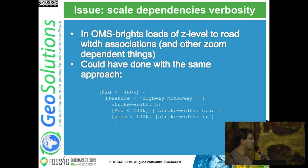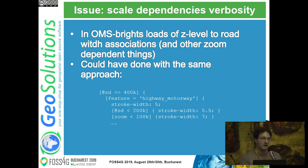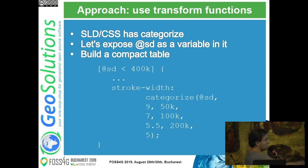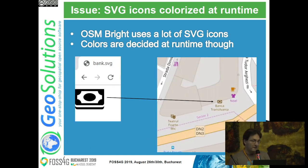Another thing was scale dependency verbosity. OSM Bright has loads of road associations at different levels - there are a ton of them. I could have written them in GeoCSS as '@sd less than 400000', '@sd less than 200000' (where SD is the scale denominator variable), but that would have been pretty verbose. So instead I used the categorize function, which is already part of SLD and CSS, and made SD the variable on which I'm classifying, building a little table: if less than 50k use width 9, if less than 100k use width 7, and so on. Pretty compact association between scale denominators and widths.